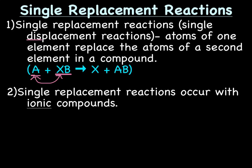Single replacement reactions occur with ionic compounds. So the AB in particular is going to be ionic, which means don't forget you're going to have to always check charges.